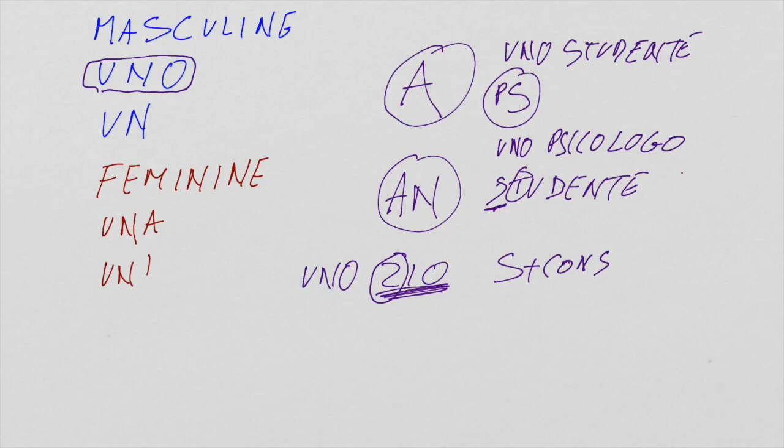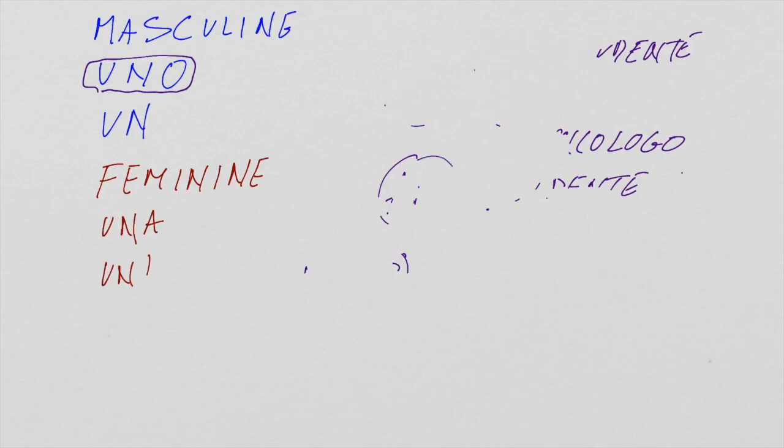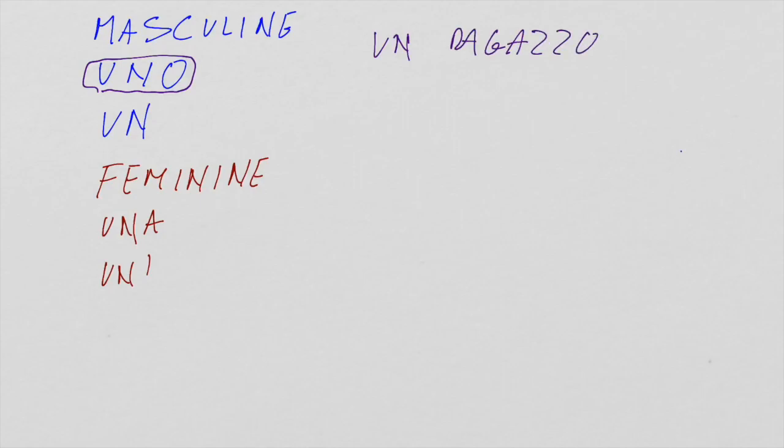Now, let's see when we use UN instead. We use UN for all the other cases. So we use UN in front of nouns starting with other consonants. For example, UN RAGAZZO, a boy, UN PROFESSORE, a professor.